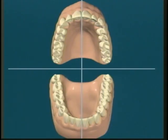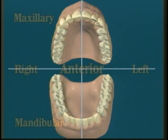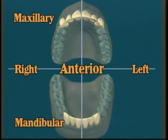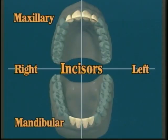Let's look at the types of permanent, or adult, teeth. There are four types of permanent, adult, or secondary teeth. The anterior teeth are made up of incisors and canines, or cuspids. These usually have only one root. The incisors are used for cutting, or incising, and there are four in each arch.